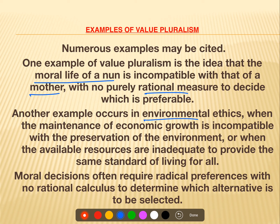Moral decisions often require radical preferences, but we don't have any rational calculus to determine which alternative is to be selected. When we have many values existing under value pluralism and we face moral decisions, we go with a particular preference — a radical preference. But we don't know if we have a better choice, and if none is said to be better, then why are we choosing that one? That is very difficult.